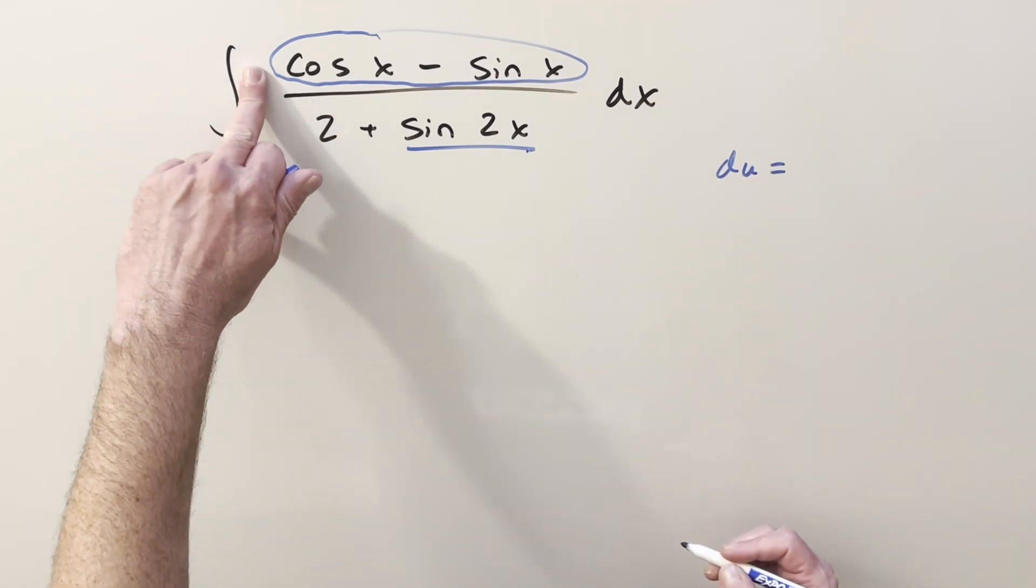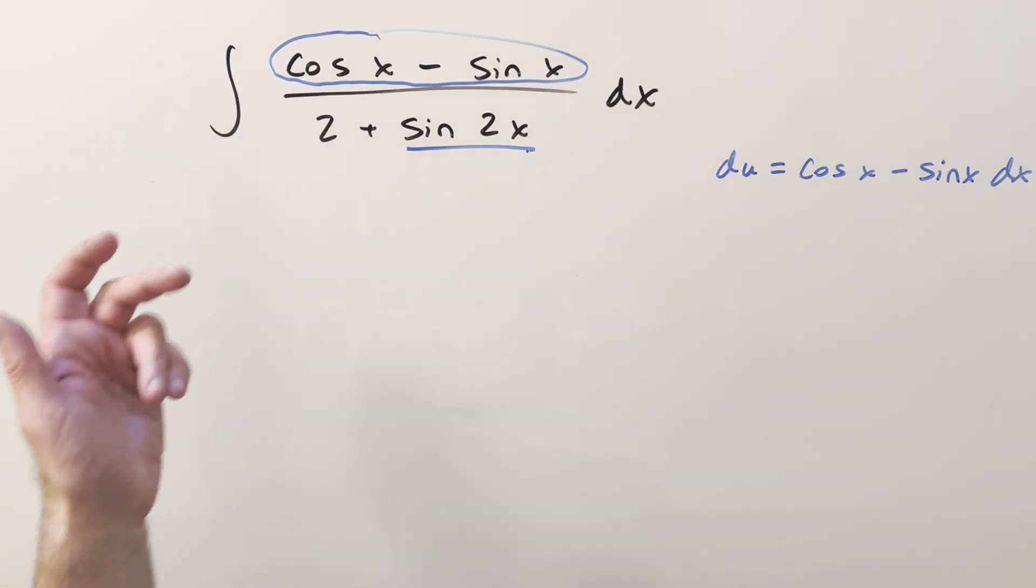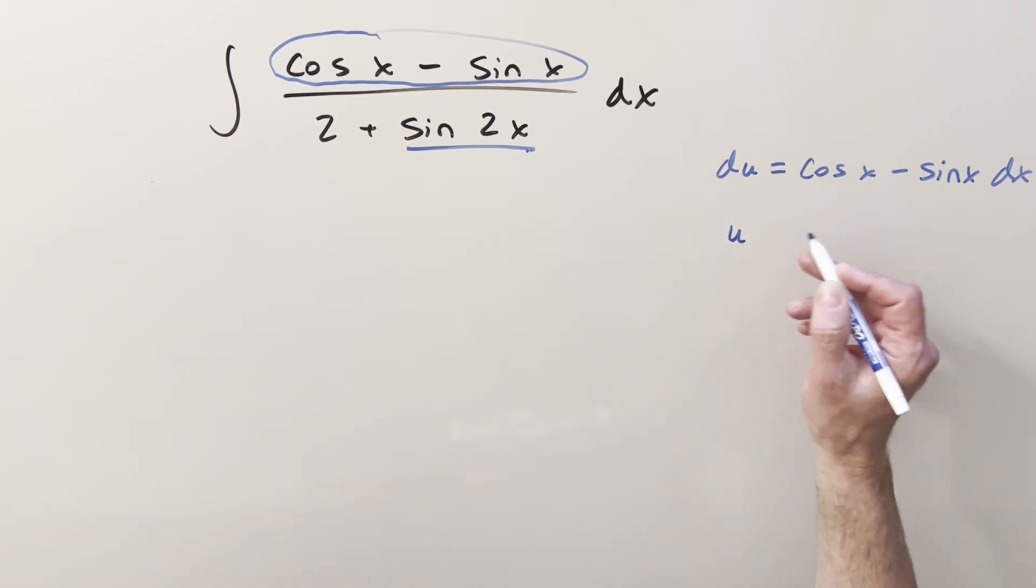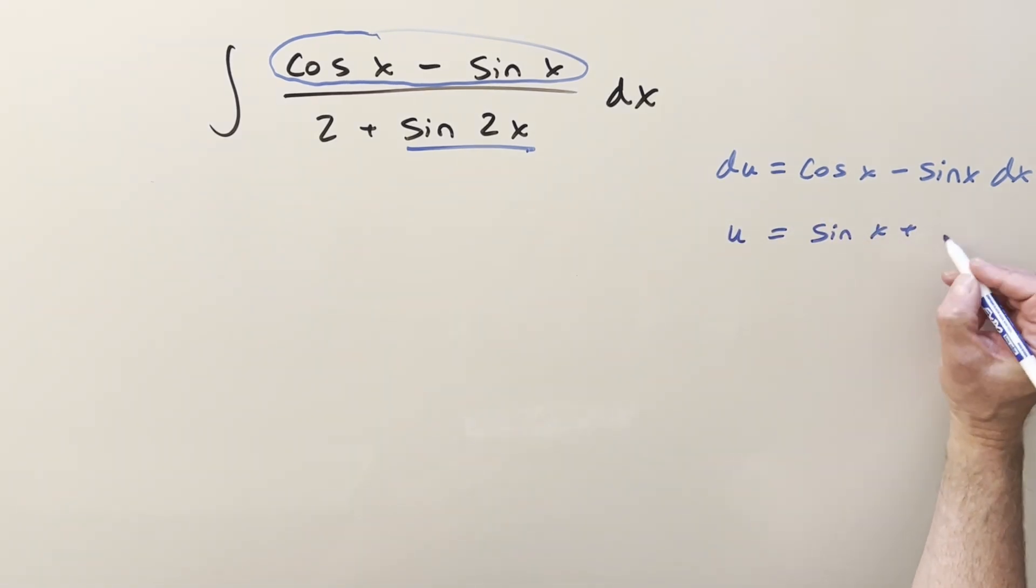What I want is I want the whole numerator to be the du value. So I'm kind of doing the u substitution in reverse, where I already know what I want my du to be, but I don't know what my u is yet. But in order to get a u, you could just integrate this. And so you'll find that what we could have for u is sine x plus cosine x.